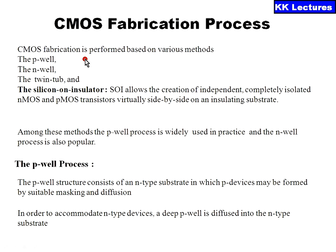The CMOS fabrication process is performed based on various methods. The first one is what we call the P-Well process, the second one is N-Well, the third one is the Twin Tub, and the fourth one is the Silicon on Insulator — the SOI model.